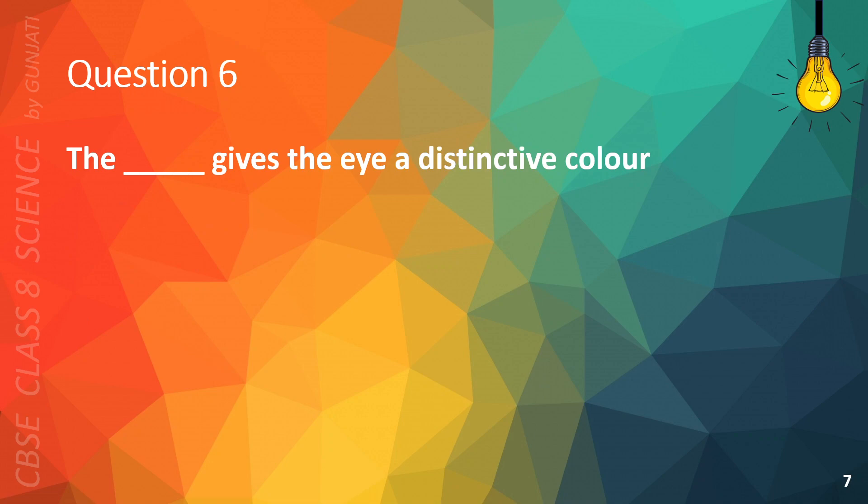Question 6. The blank gives the eye a distinctive color. A. Iris, B. Retina, C. Cornea, or D. Pupil. The correct answer is A. Iris.